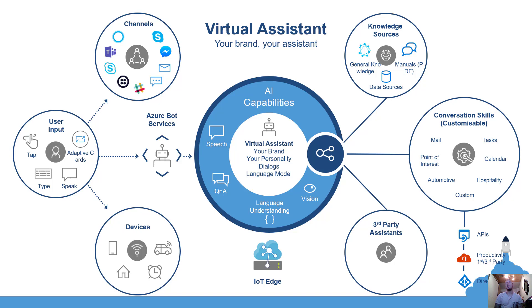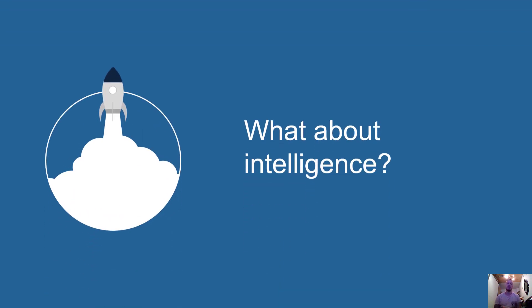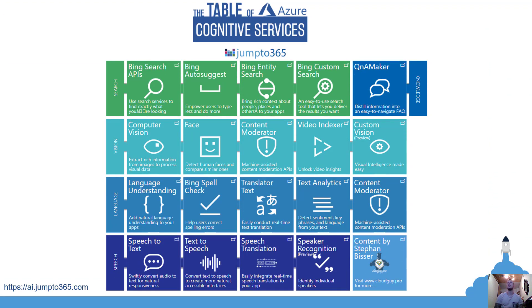The AI capabilities are at the heart of the bot. Microsoft offers the Azure Cognitive Services — a set of APIs categorized across various areas. For speech: speech-to-text, text-to-speech, speech translation, speaker recognition. For language: language understanding, a Bing-powered spell checker, text translator, and text analytics. For vision: various vision services. For search: Bing search APIs. For knowledge management: the Q&A Maker service, which aggregates information into an easy-to-navigate FAQ — which we'll see in the demo.